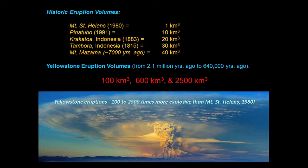How can we compare that to the eruptions at Yellowstone National Park? At Yellowstone, we've had three eruptions since 2.1 million years ago, the youngest 640,000 years ago. The three most recent supereruptions produced 100, 600, and 2,500 cubic kilometers of pyroclastic material. If our algorithm is correct as a first approximation, then that eruption has to be 2,500 times more explosive than the eruption of Mount St. Helens in 1980. Those kinds of numbers are difficult to wrap your mind around — what does that mean? What would that be like? It's very difficult to understand that.